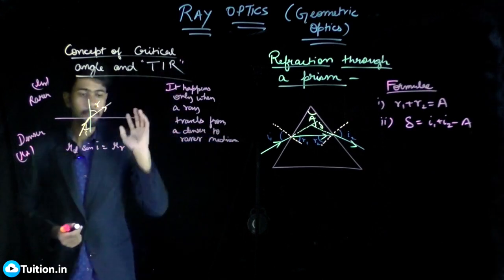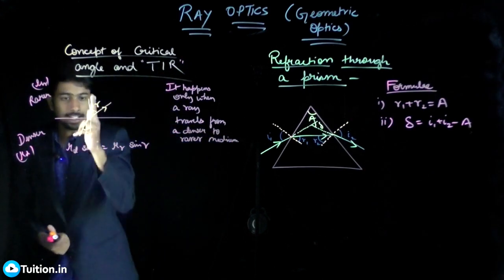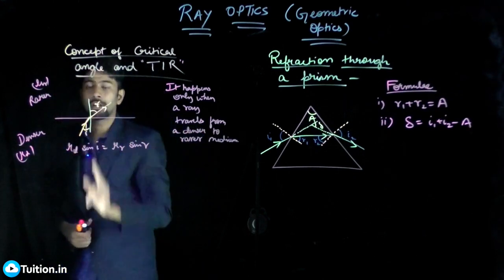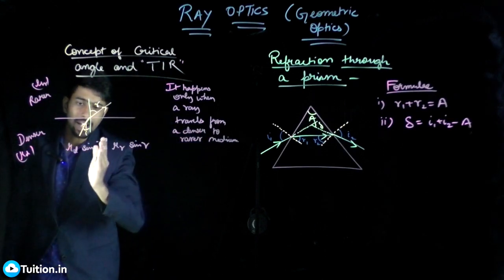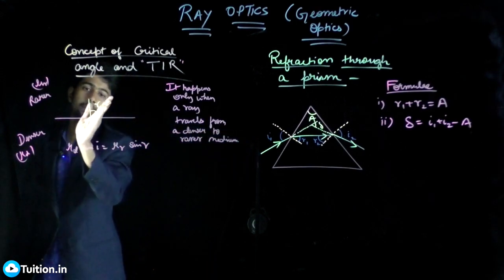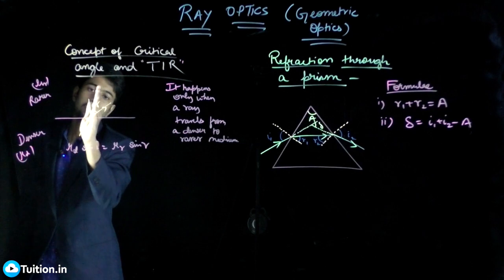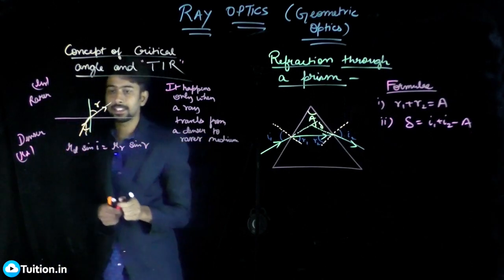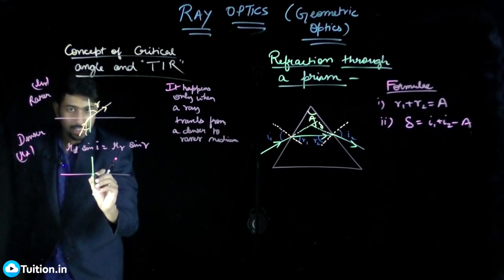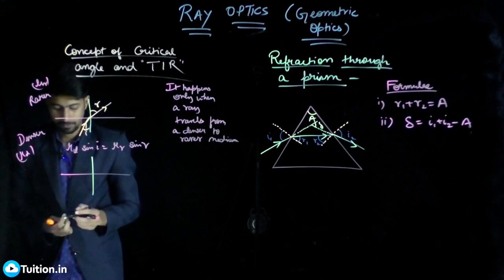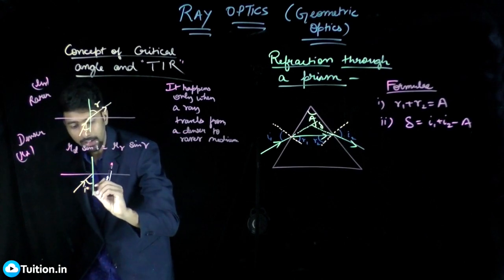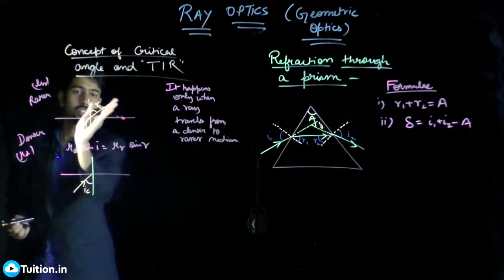By Snell's law, if you incident at i = 0 (along the normal), sin r = 0 and the ray passes through undeflected. As you start increasing i, r also starts increasing — the ray keeps bending further away from the normal. There is a special angle at which something significant happens.